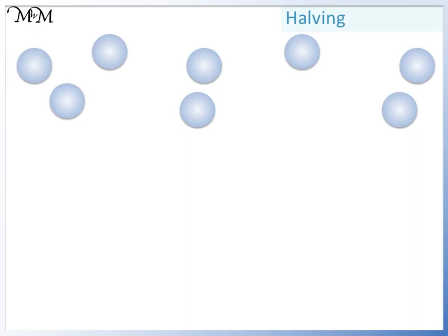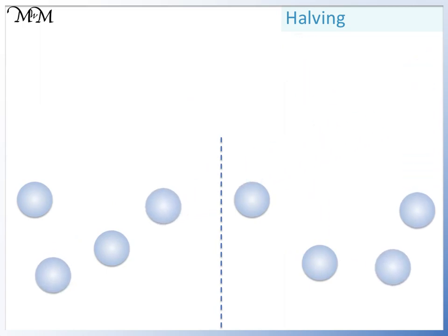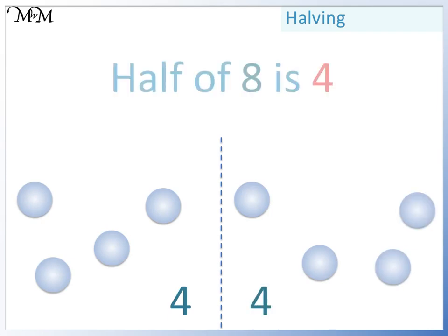Here we have eight counters. Unlike the previous examples, we can't simply split them into two equal parts with a clear line. So instead we will share them into two equal parts. We have four counters on the left and four counters on the right. Half of eight is four.